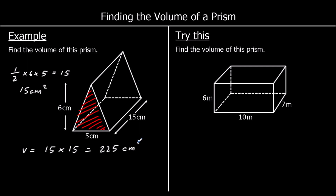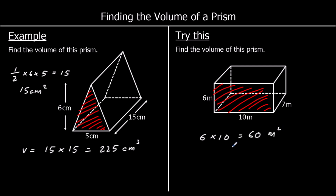One of these for you to try. The volume is the area of the shape on the front times how far back it goes. We've got a rectangle on the front this time, so the area of the rectangle is 6 times 10, which is 60 meters squared. Multiply by how far back it goes: 60 times 7 is 420. The volume is 420 meters cubed.